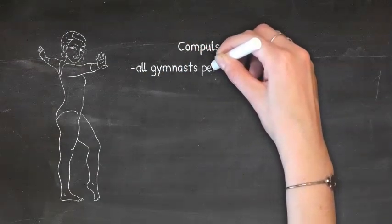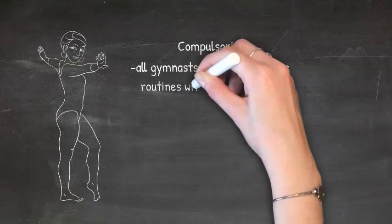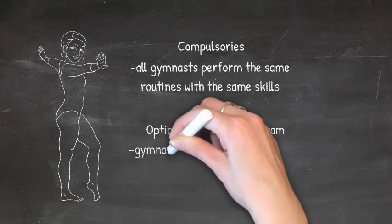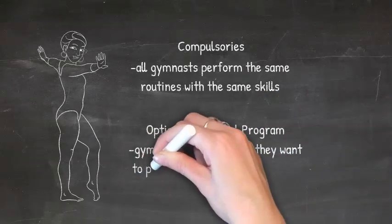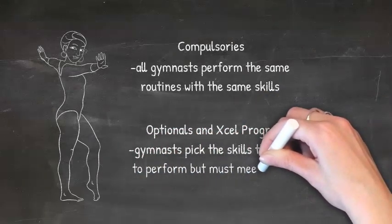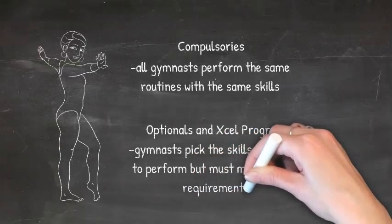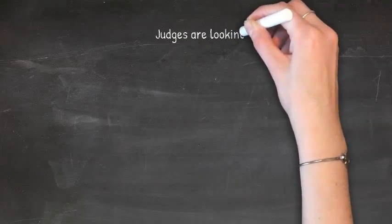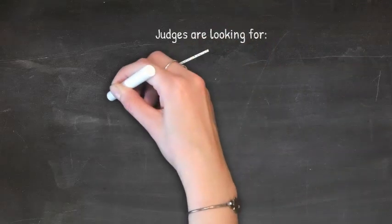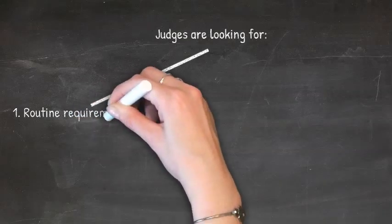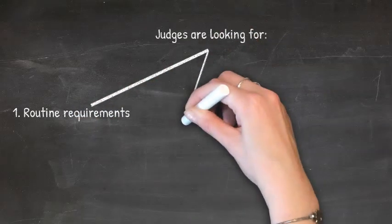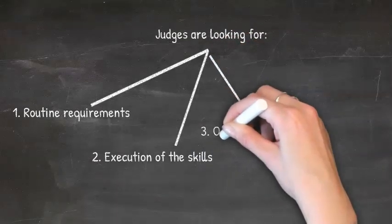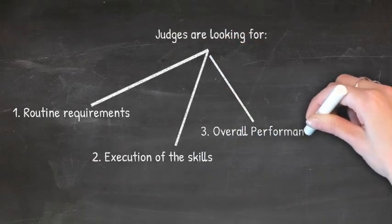In compulsories, all gymnasts perform the same routines with the same skills, whereas in optionals and the Excel program the gymnasts pick the skills they want to perform, but they must meet certain skill requirements within their level. Regardless of skill level, judges are looking for a few things across the board: whether the gymnast fulfilled the routine requirements, how she executed her skills, the overall performance of her routine, and any miscellaneous deductions.